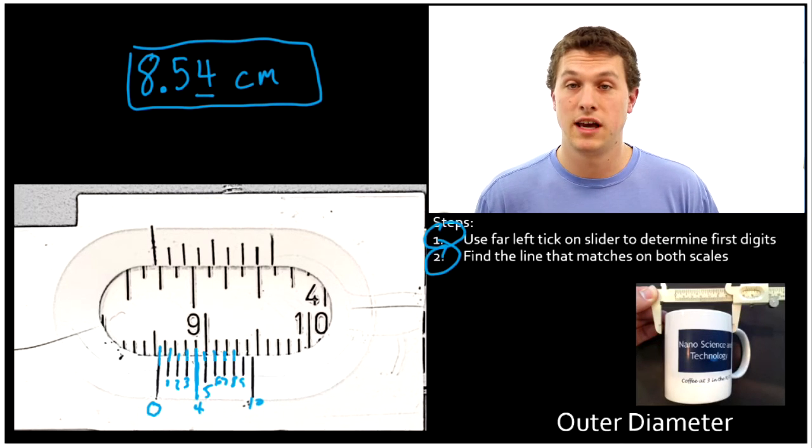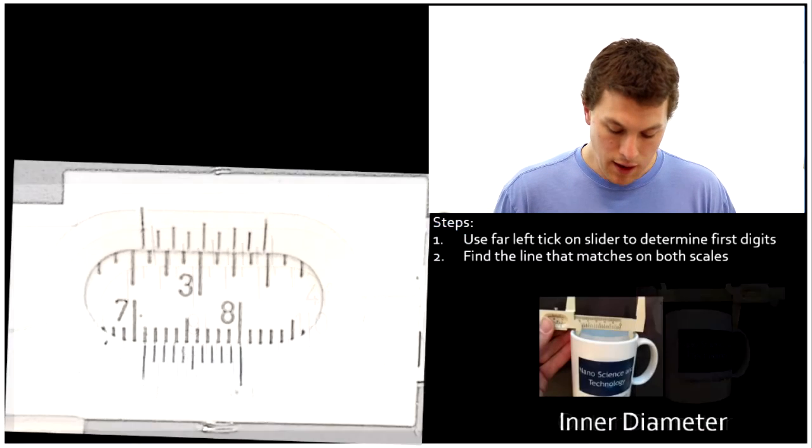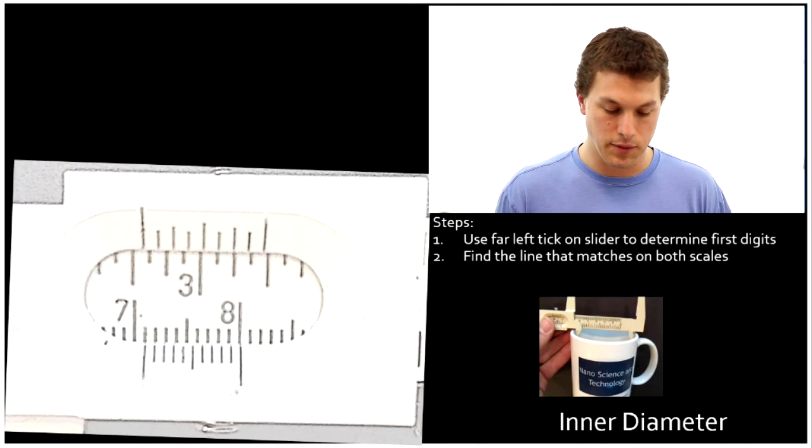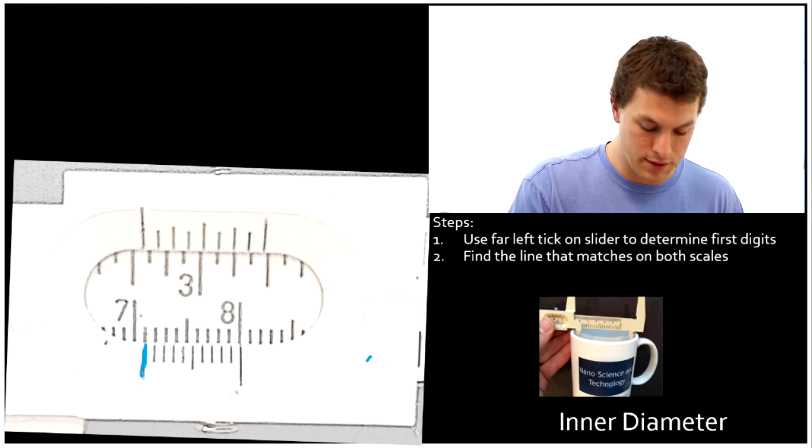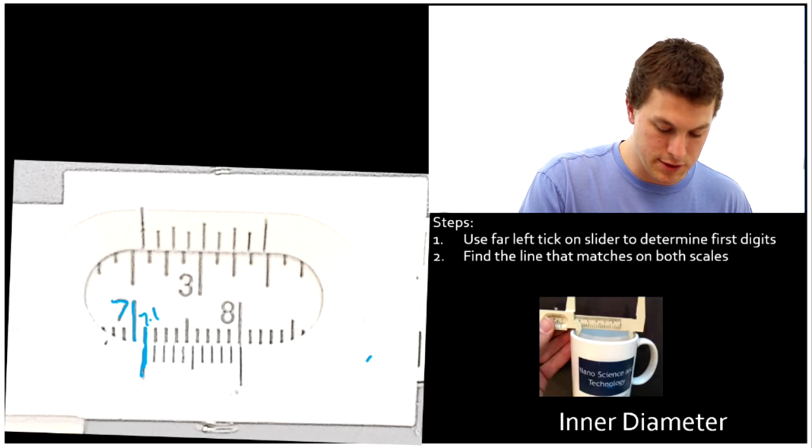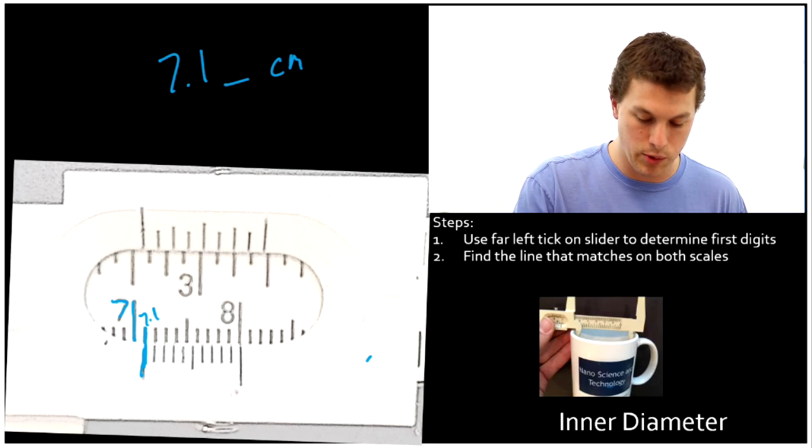Let's do two more examples. These ones should go faster now that you're sort of oriented. This one's the inner diameter of our coffee mug. Once again, we're going to look at the leftmost tick. We see that it lines up with the first tick past 7. Here's 7, and then we see this guy is where it lines up. That's 7.1. So that tells us our first two digits are 7.1 centimeters, and we need to figure out what we want to write at the end of that.